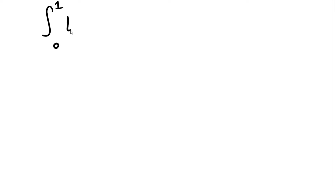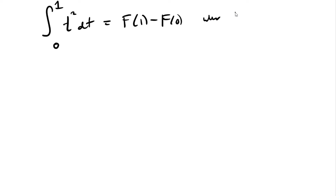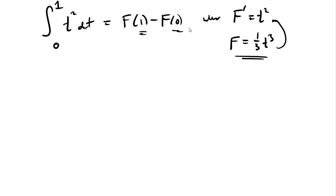Let's look at the example we just had: the integral from t equals zero to t equals one of t² dt. The Fundamental Theorem of Calculus tells us this should be F of one minus F of zero, where capital F prime equals t². That means capital F must be one-third t³, because the derivative of that function is t². So F of one is one-third times one³, and F of zero is one-third times zero³, which gives one-third.